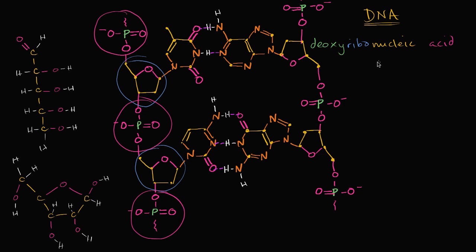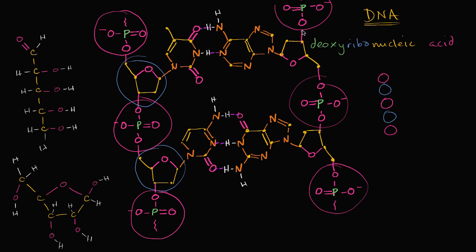So I could draw the strand something like this: phosphate, and then we have a sugar. Let me draw all the phosphates ahead of time. So you have the phosphates on that end, and then you have the sugars. And you see the same thing on the other strand as well, where we have phosphate with a sugar, then another phosphate, then a sugar, then another phosphate. Let me circle the sugars as well. So the phosphate, and then you have the sugars in between the phosphates.